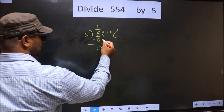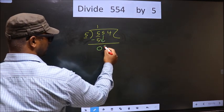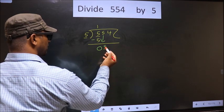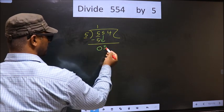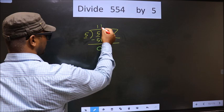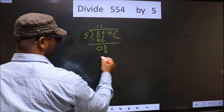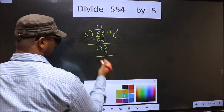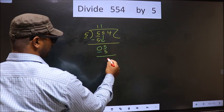Now bring down the next number, so 5 down. Here we have 5, and here also 5. When do we get 5 in the 5 times table? 5 once is 5. Now subtract: 5 minus 5 equals 0.